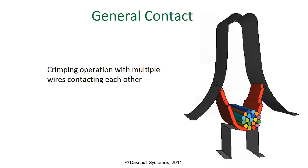In general contact, the analyst does not need to predict which surfaces may come in contact. Instead, Abaqus monitors the surfaces of all parts involved in the simulation and automatically detects contact between them. Therefore, you would only define general contact once in the simulation setup for crimping, and any contact interaction between any of the wires would be detected by Abaqus automatically.